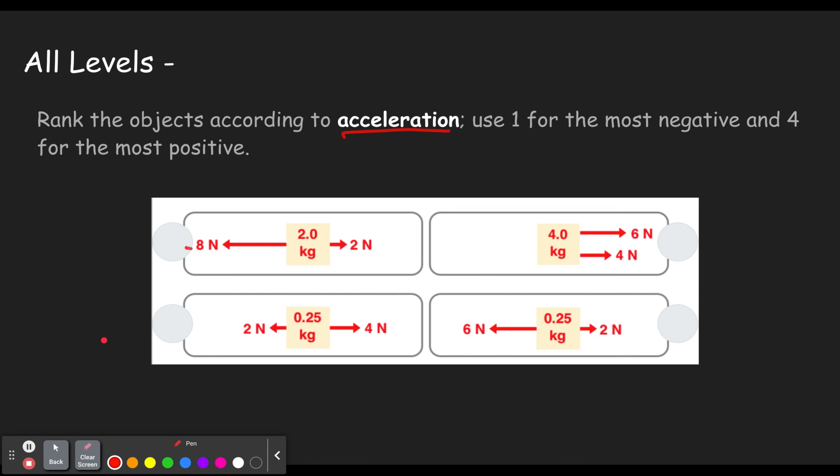Okay. First, let's go through and make all of our negative forces negative. Okay. And so we'll get our net forces here. I'm just going to put an F this time. So this one was negative six newtons. This one is two newtons. This one is 10 newtons. And this one is negative four newtons.